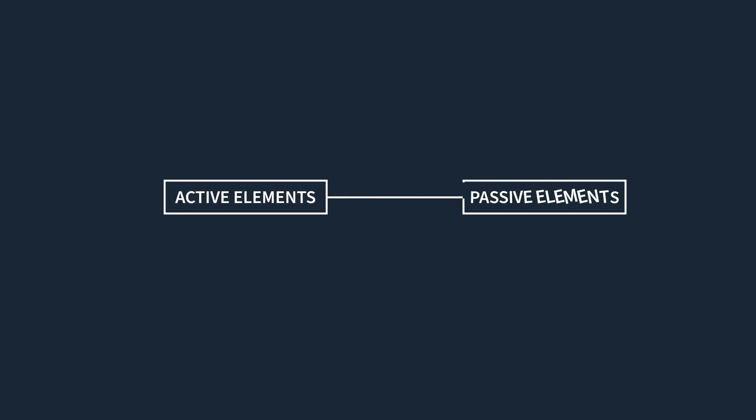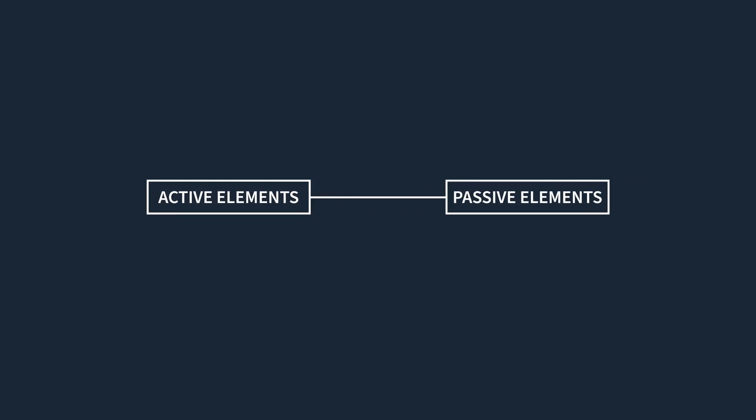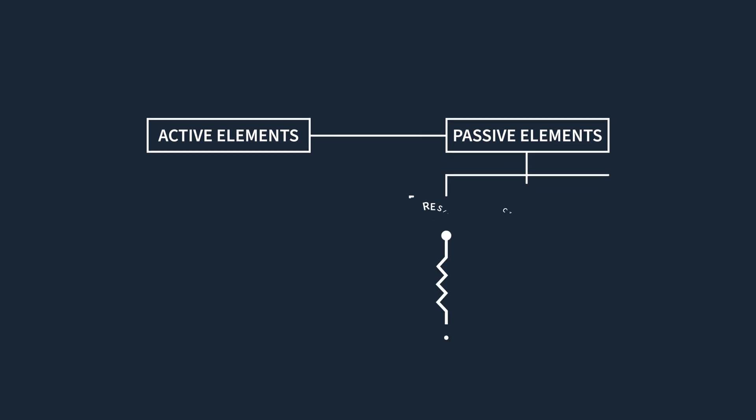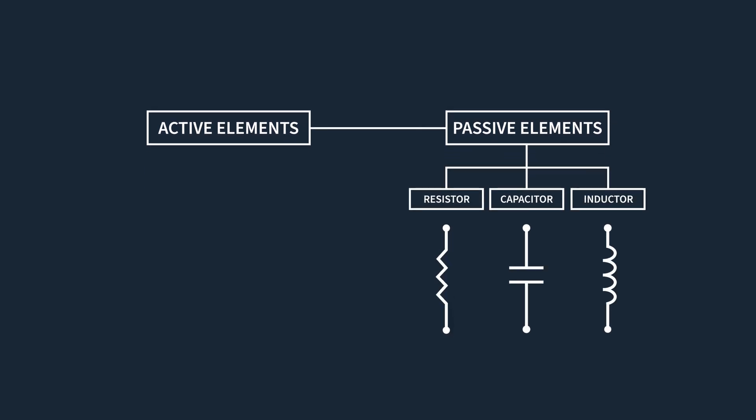In circuits, components fall into two main categories: active elements and passive elements. While learning the fundamentals of voltage and current, we typically begin with passive elements for simplicity. Passive elements are those that either store or dissipate energy within a circuit. Active elements like batteries and generators are power suppliers — they can supply power or energy to a circuit from an external source.